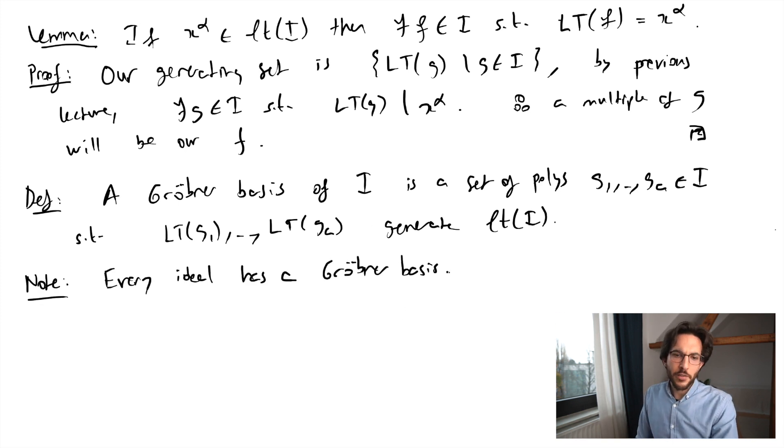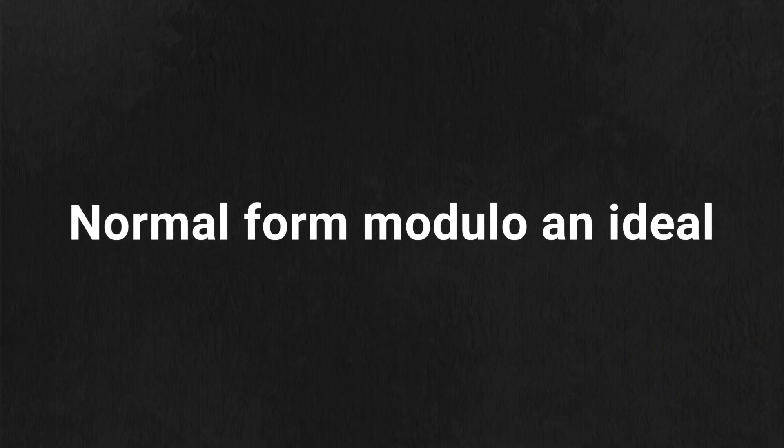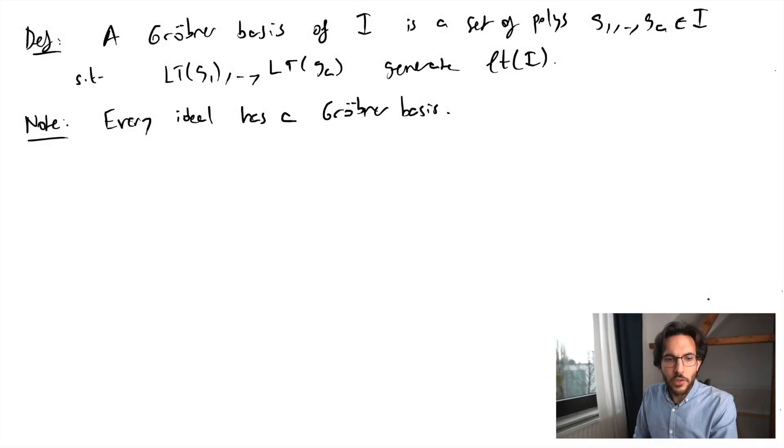And what happens is that Dickson's lemma says that the ideal of leading terms has a finite basis. And then from the previous lemma, we find their lifts to our original ideal. So we find polynomials g1 through ga, whose leading terms form this finite basis for the ideal of leading terms. And then we have our Gröbner basis. So we made this observation now. I have not yet shown that a Gröbner basis is in fact a basis for the ideal. This will follow from the next two results. So a surprisingly simple observation comes next, but it's very strong. We call it a proposition because it's very strong.